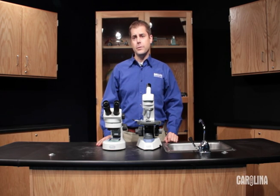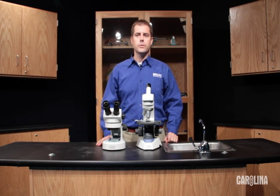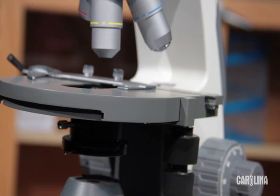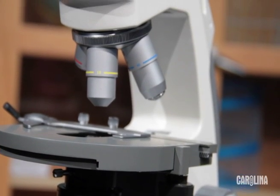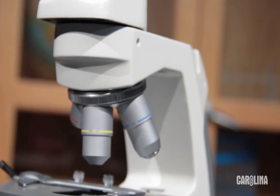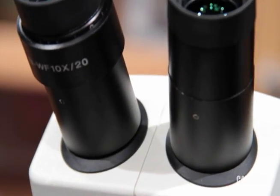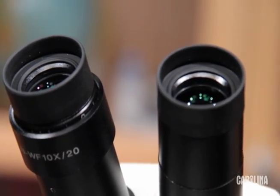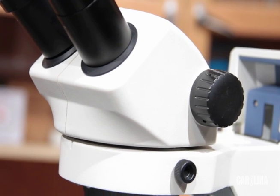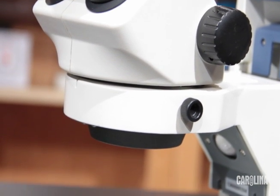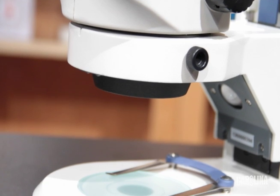First let's talk about the difference between the compound and the stereo microscope. The compound is used to look at micro objects with higher magnification and the stereo microscope has two eyepieces and two objectives so that you can see in stereo. The stereo microscope is used to look at macro organisms.